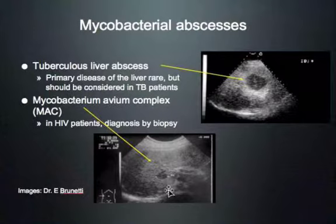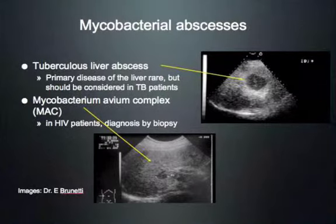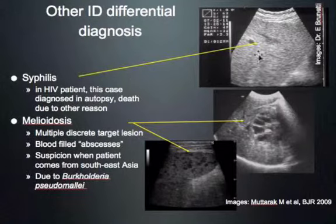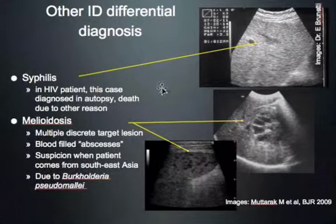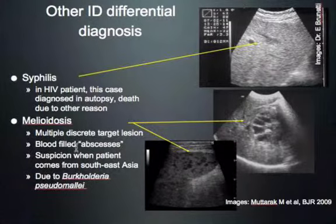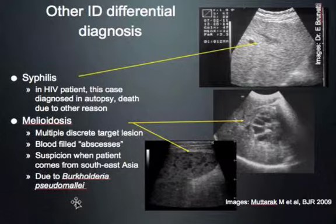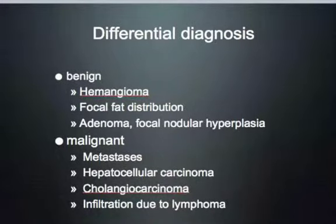For the books: a syphilitic liver abscess was found on autopsy in a patient of Enrico's who died of other reasons. In patients from Southeast Asia, think about melioidosis — caused by Burkholderia pseudomallei — which causes a TB-like systemic picture and focal lesions in spleen and liver, with abscesses often filled with blood-stained material.